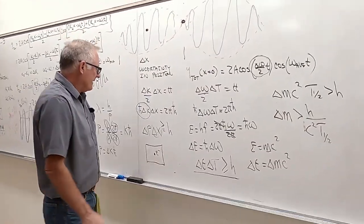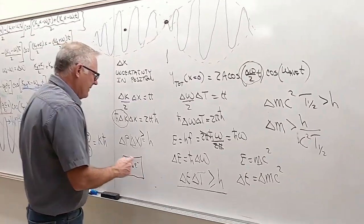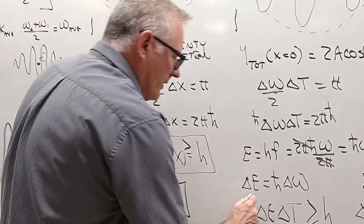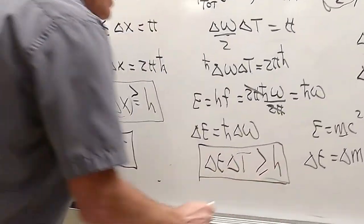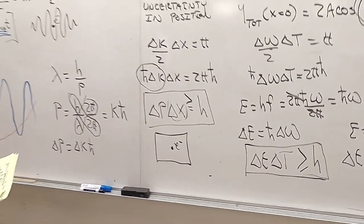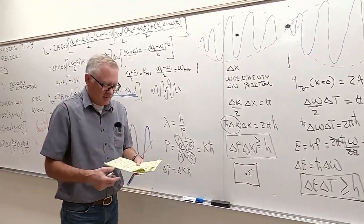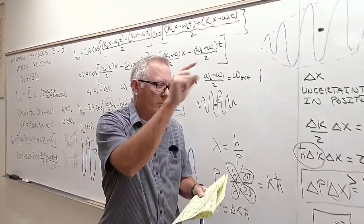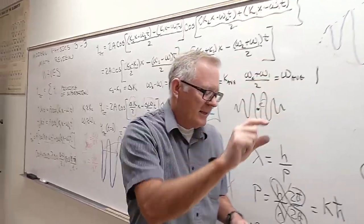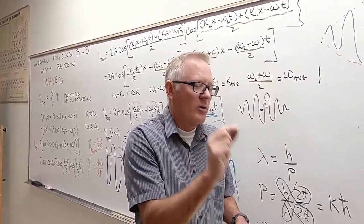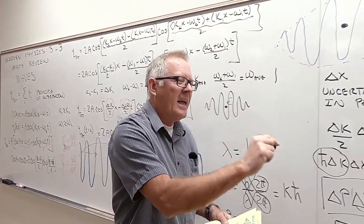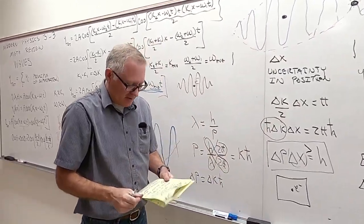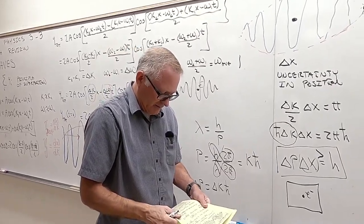In summary, we have three Heisenberg uncertainty principles: Δp·Δx ≥ h (position-momentum), ΔE·Δt ≥ h (energy-time), and the impossibility of knowing which slit an electron passed through in a double-slit experiment while also observing the interference pattern.